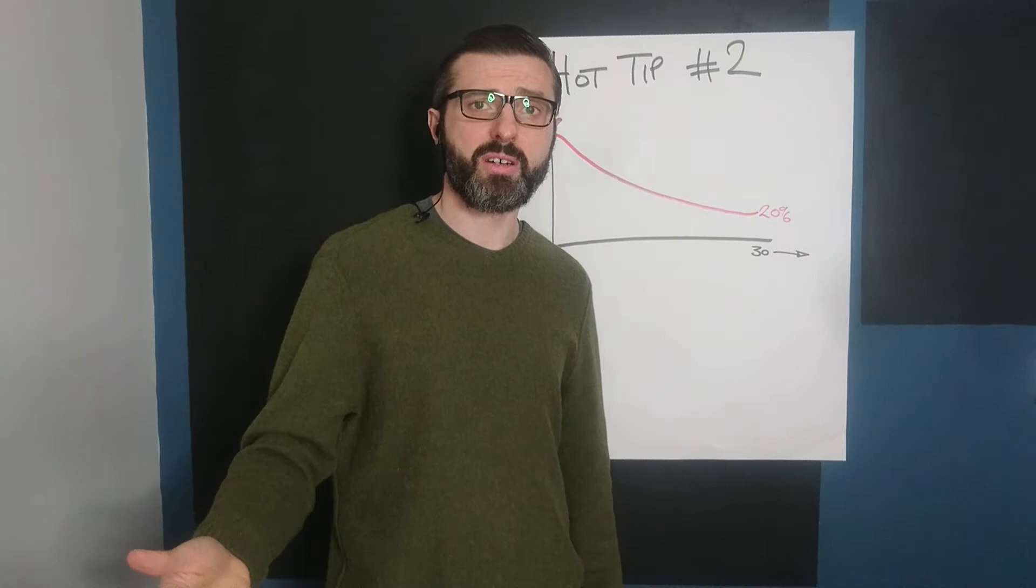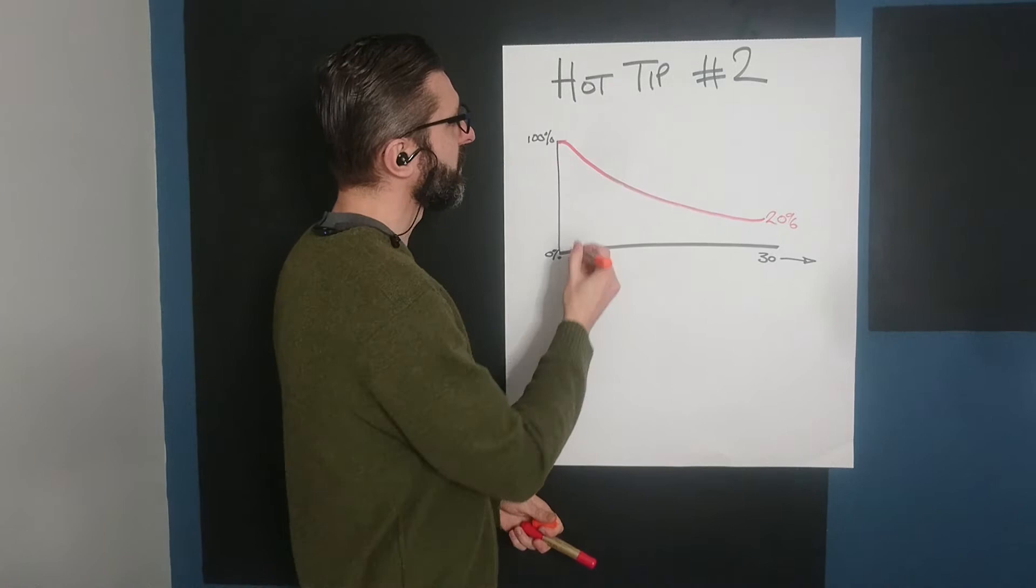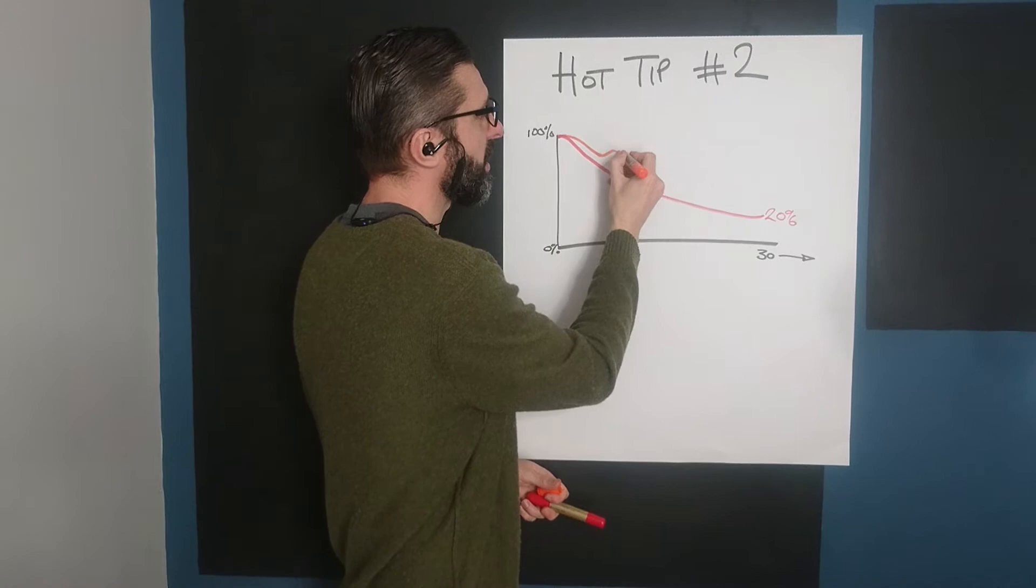But what does that look like? Well, the remembering curve here starts on day one at 100%, and as we start to then fluctuate, we know that we have to read the notes. So maybe it comes back up again. It starts to dip off a little bit. We watch the video. Again, it comes back up.